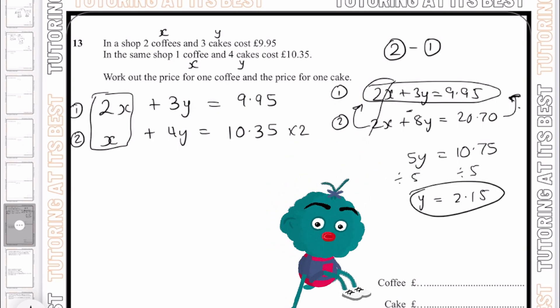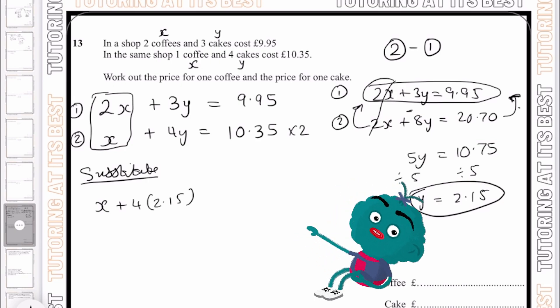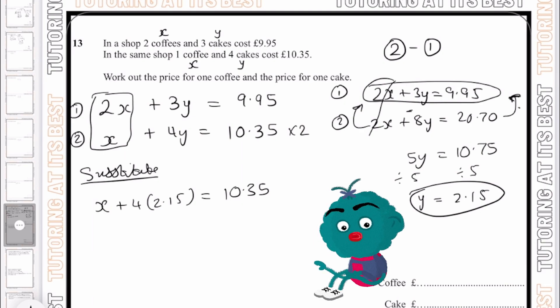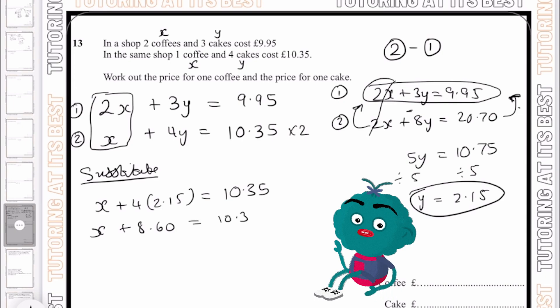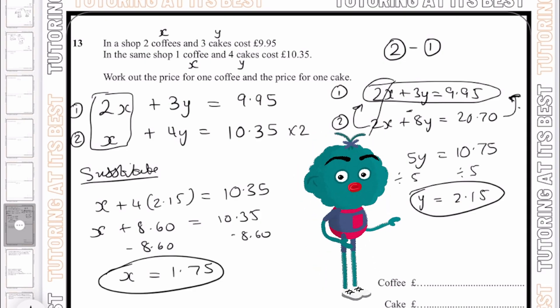So now I've got that down, let's go ahead and substitute. Let's take our equation, which is x plus 4y, which is £2.15, and that should equal £10.35. We then know x plus £8.60 equals £10.35. And using my inverse operation, I will subtract £8.60 on both sides. So now I have x equaling £1.75.